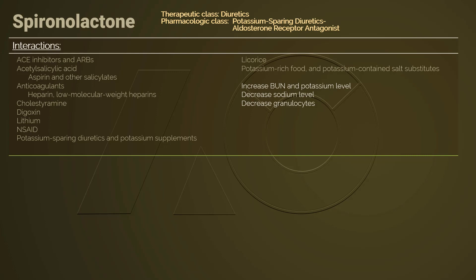The aldosterone-like effect of licorice could be antagonized by spironolactone; the ulcer-healing quality would be blocked and the risk of hypokalemia increases with this combination. Spironolactone can increase BUN and potassium levels and it decreases sodium levels. Granulocytes might be affected in patients using spironolactone.